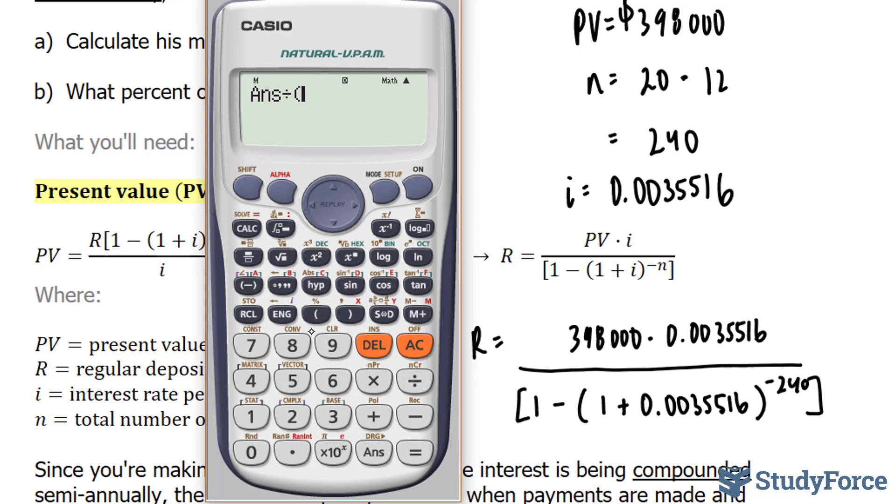Divided by this whole thing, 1 minus 1 plus 0.0035516 to the power of negative 240. Close bracket.